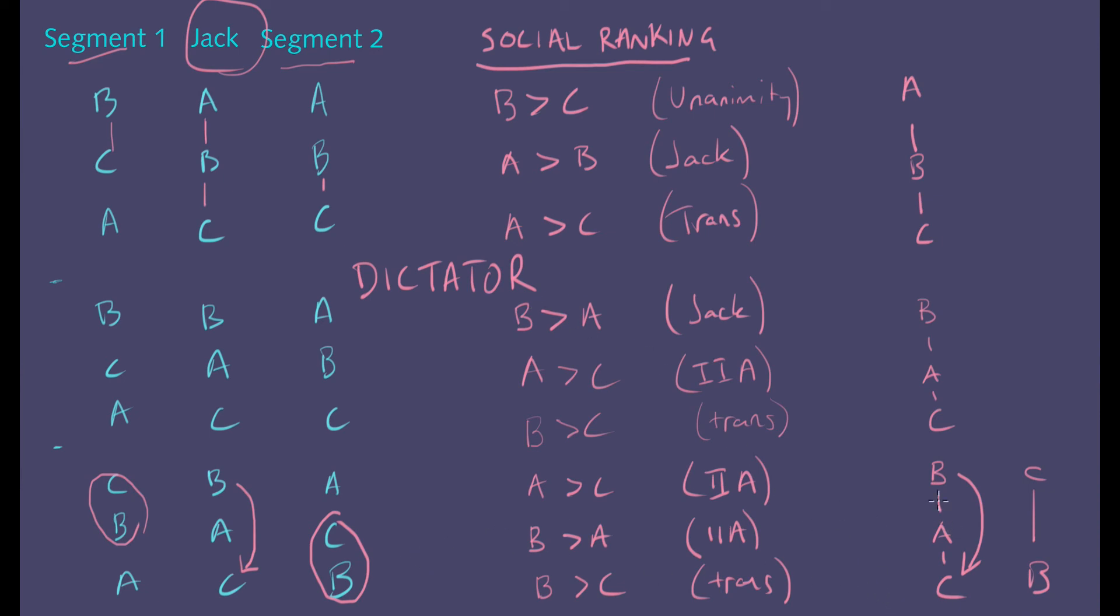And if Jack changed his mind on B and C, he flipped them around in some way, well then you would have unanimity again. And so unanimity would dictate that C must be ranked better than B. So it's all down to Jack. If he goes one way, the social ranking would be B above C. If he goes the other way, it would be C above B, even though no one else in the entire population has changed their mind. In fact, even though in this particular case, everyone has the opposite preference from him. That's what it means to be a dictator.